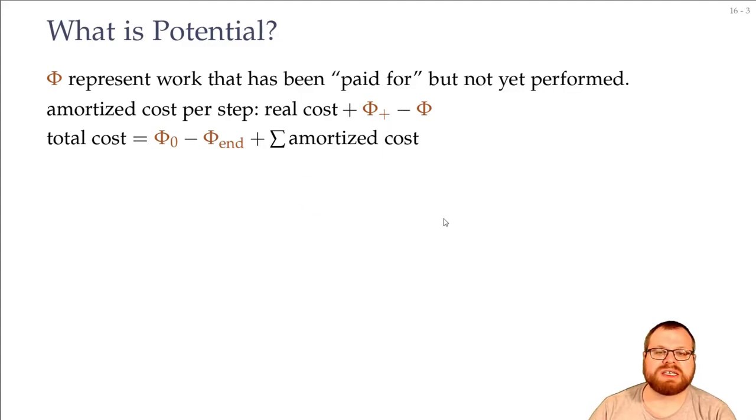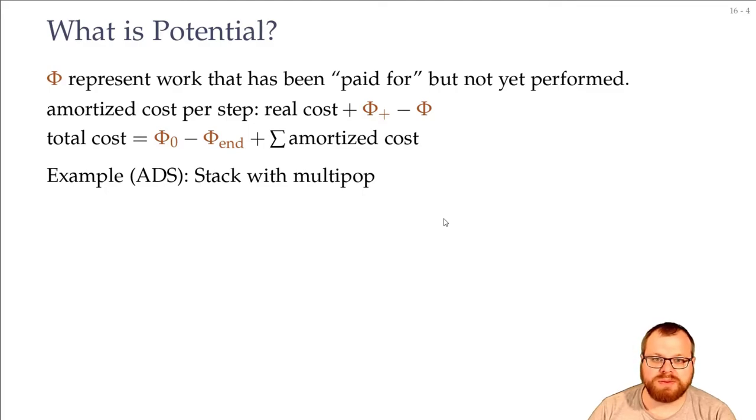Let's have a look at the following example. We want to have a stack with multipop. In a stack with multipop, we have two functions. We can push some number onto the stack, and we can pop numbers, but not only one, we can pop as many as we want in one step, but we still want it to be efficient. Because in the worst case, if we have n numbers on the stack, and we pop all of them, then it takes an order of n time, but we want to have amortized still constant time per function. And to do that, we use the potential method. We define the potential function to be the size of the stack.